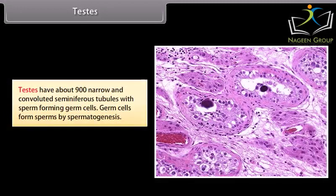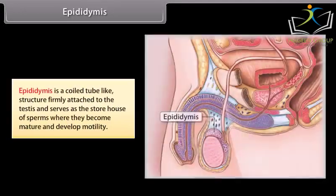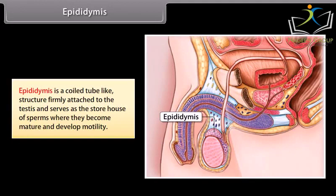Testes have about 900 narrow and convoluted seminiferous tubules with sperm-forming germ cells. Germ cells form sperms by spermatogenesis. The epididymis is a coiled tube-like structure firmly attached to the testes, and serves as the storehouse of sperms where they become mature and develop motility.